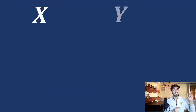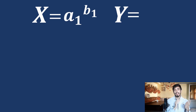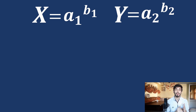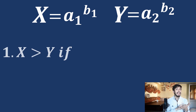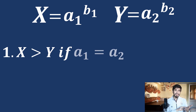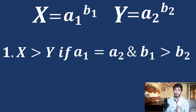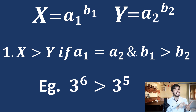Suppose there are two numbers x and y, where x equals a1 raised to the power b1, and y equals a2 raised to the power b2. Rule 1: x is greater than y if a1 equals a2 but b1 is greater than b2. For example, 3 raised to the power 6 is greater than 3 raised to the power 5.